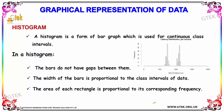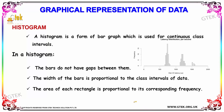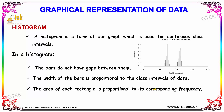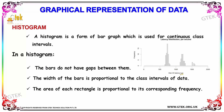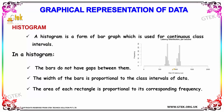Now let's discuss about histogram. A histogram is a form of bar graph which is used for continuous class intervals. In a histogram, the bars do not have gaps between them, and the width of the bars is proportional to the class intervals of data. The area of each rectangle is proportional to its corresponding frequency.